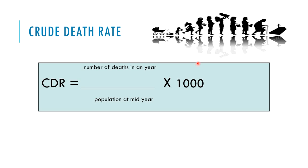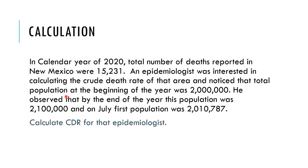The crude death rate equals the number of deaths in a specific community in a specific time period, divided by the mid-year population of that community in that specific time period, multiplied by 1,000. We always calculate crude death rate per 1,000 for community comparisons. As a calculation exercise: in 2020, the total number of deaths reported in New Mexico were 15,231. The epidemiologist noted the total population at the beginning of the year was 200,000. Calculate the crude death rate for that epidemiologist using the mid-year population.